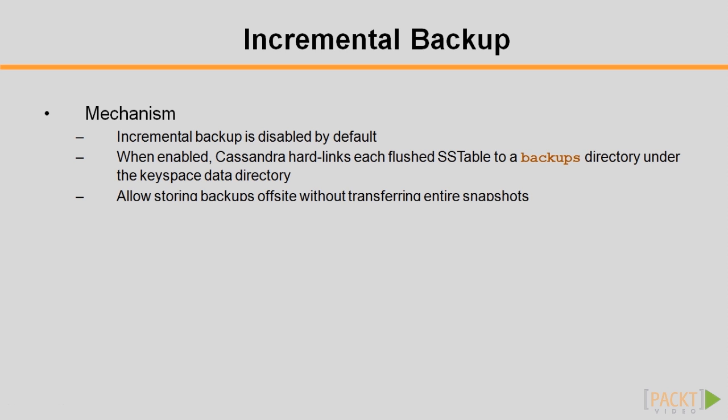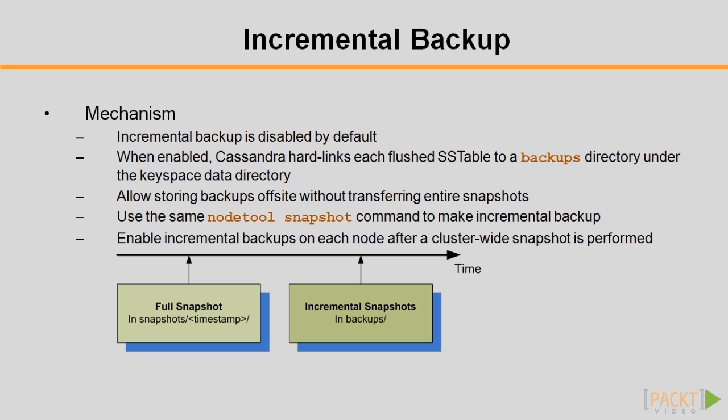incremental backup allows storing backups off-site without transferring entire snapshots, thus saving both network bandwidth and disk space. The same nodetool snapshot command is used to make incremental backup. It should be enabled on each node after a cluster-wide snapshot is performed. Incremental backup only backs up data updated since the last snapshot was taken. Cassandra creates a hard link to each SSTable flushed or streamed locally in a backups subdirectory of the keyspace data. Note that housekeeping those hard links is the administrator's responsibility.